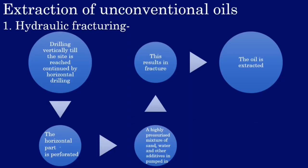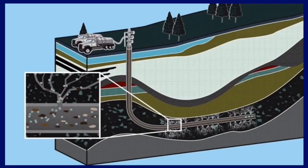We now see the extraction of unconventional oil. The first method is hydraulic fracking. First, a vertical bore is drilled and on reaching close to the site, it is drilled horizontally, then cement casted. The horizontal part is then perforated with appropriate machinery. After that, a highly pressurized mixture of sand, water and other additives is pumped in. This causes cracks in the crust and oil gets absorbed. The pebbles in the fracking liquid mixture serve to keep the cracks open.